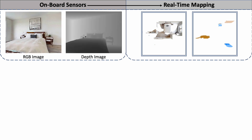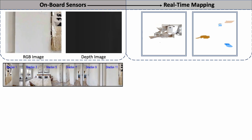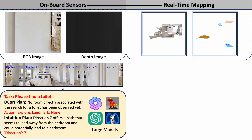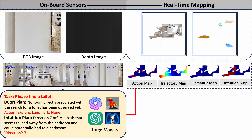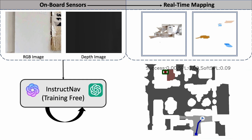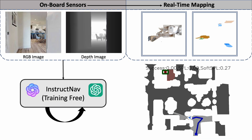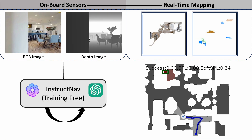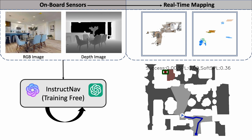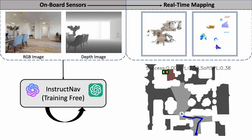Our InstructNav effectively grounds the common-sense reasoning and spatial understanding abilities from large models into the navigation process. As this process continues periodically, our InstructNav can successfully achieve long-horizon exploration tasks like finding the toilet.